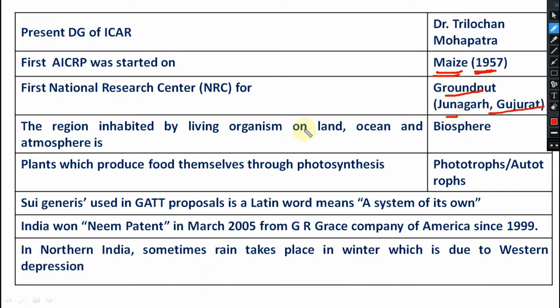The first NRC for groundnut is at Junagadh, Gujarat. The region inhabited by living organisms on land, ocean, and atmosphere is known as the biosphere. Plants which produce food themselves through photosynthesis are known as phototrophs or autotrophs.